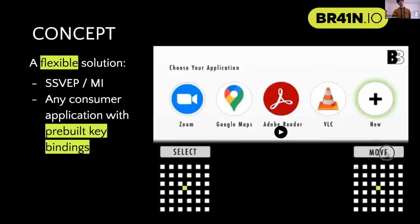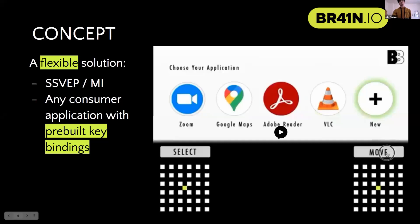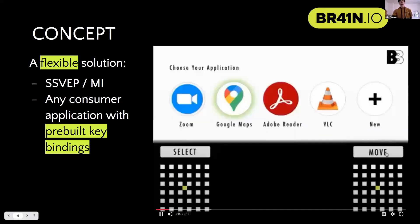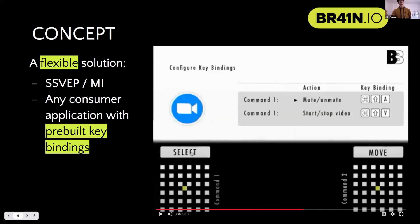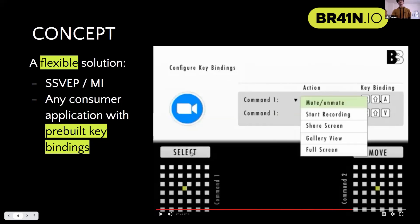So you have access to two commands which we can map to anything. In our application, they would initially be mapped to move and select. This would allow the user to move through a selection of applications, and then the user would select Zoom. It would take them to the next screen, where they would be able to choose any action which Zoom has pre-built, which has a key binding in Zoom.